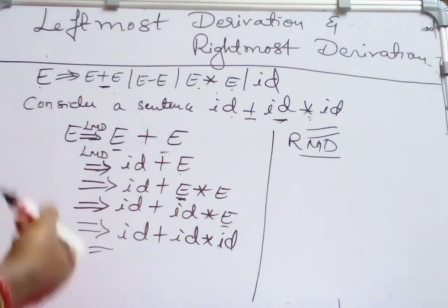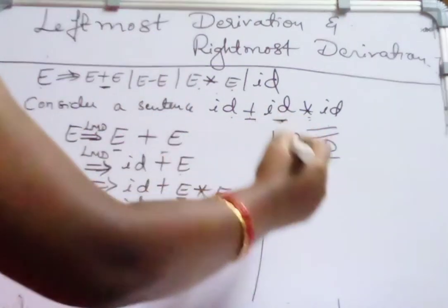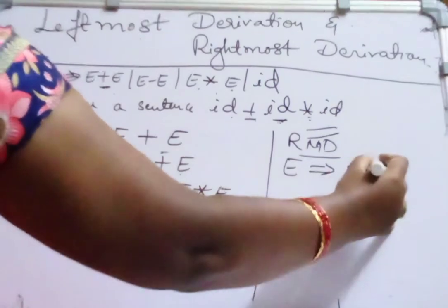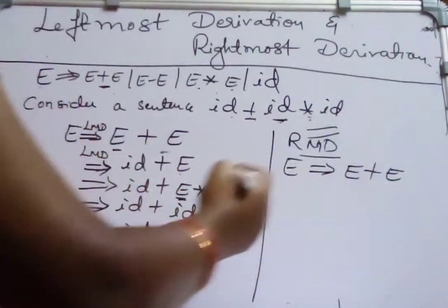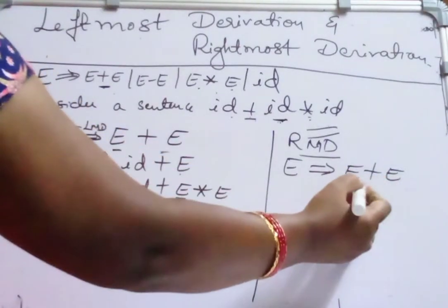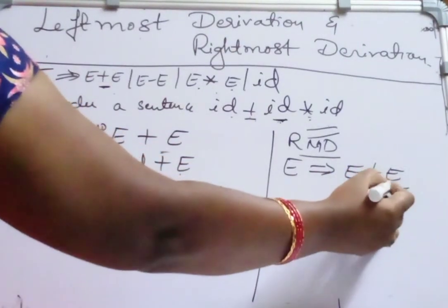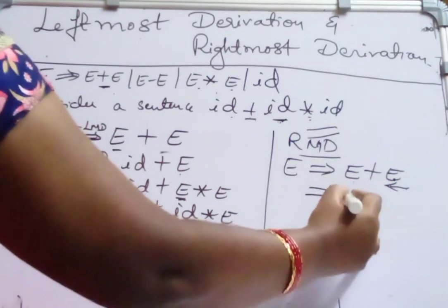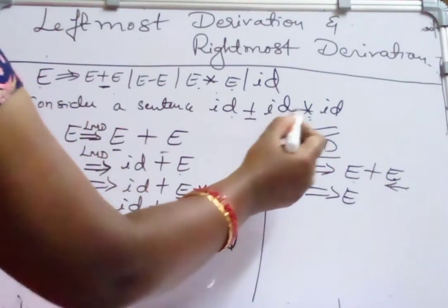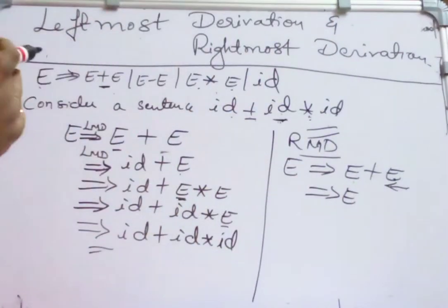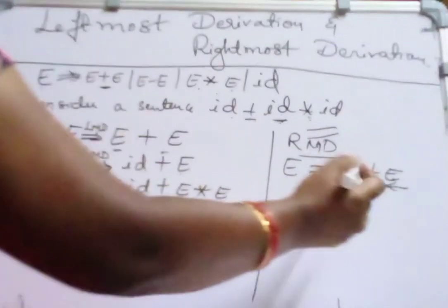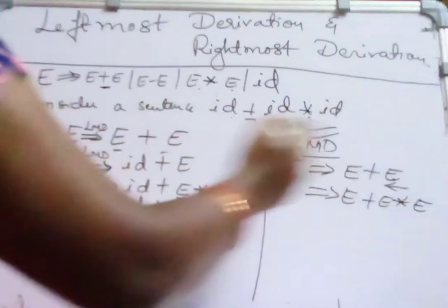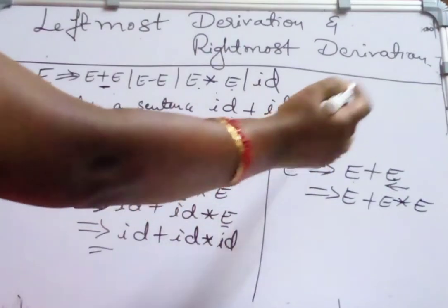To do that, I will start from the same starting symbol. E derives E plus E. Which is my rightmost symbol? This rightmost E — I start substituting for this E. I want ID star ID from the right-hand side, so for this E I am substituting E star E.